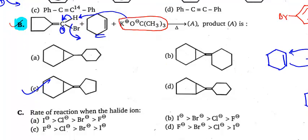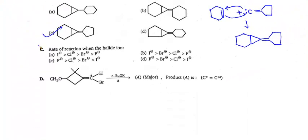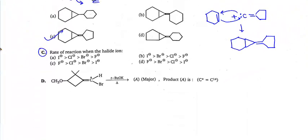Now question C is easy. It asks about the rate of reaction when the halide ion is involved. Rate of reaction — which halide ion gives the fastest reaction? Weak bases are good leaving groups. If we go top to bottom in the periodic table: F, Cl, Br, I — basicity decreases top to bottom.